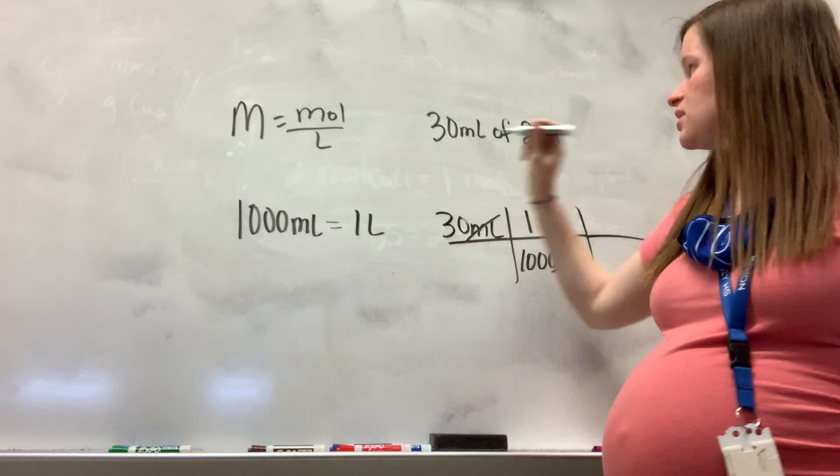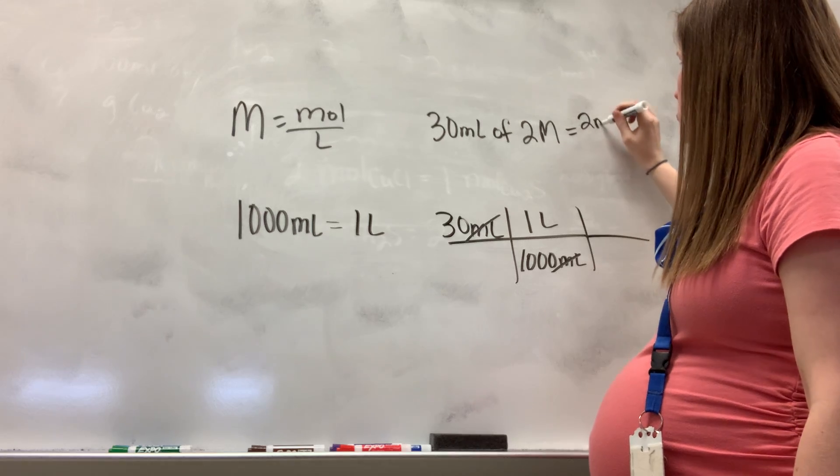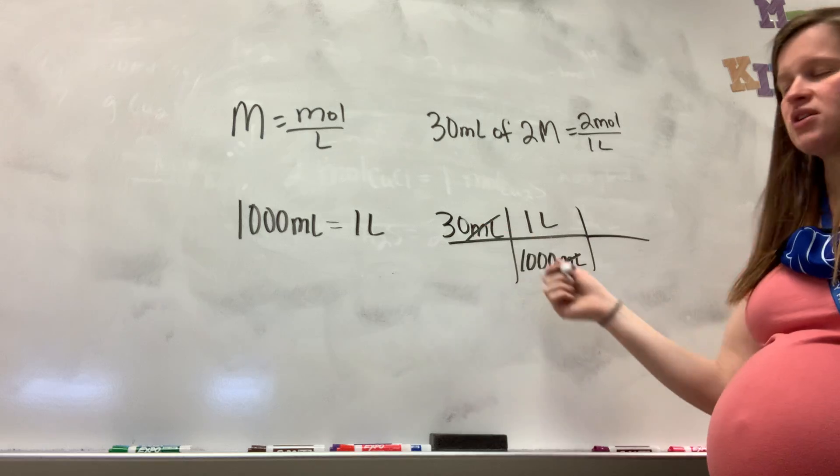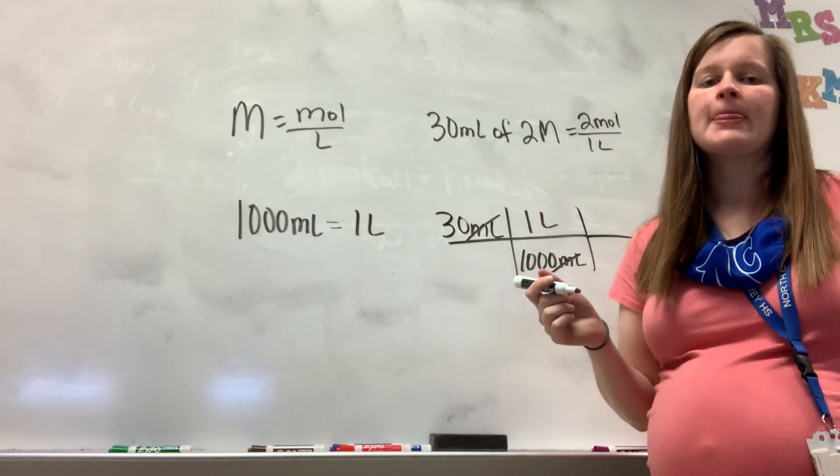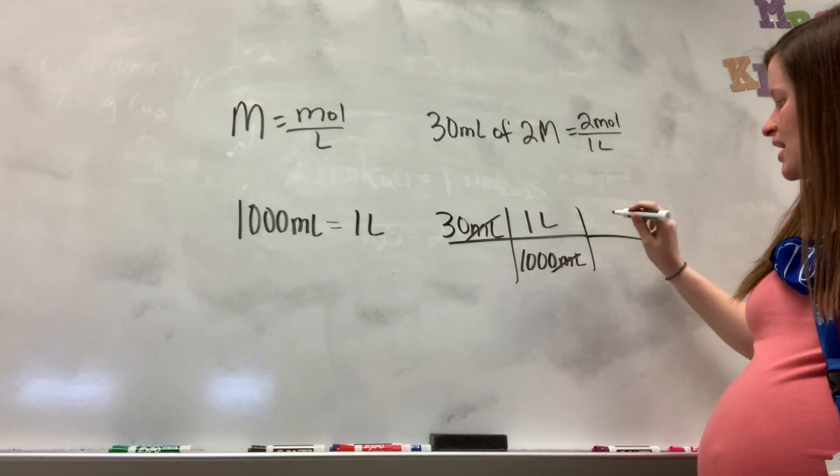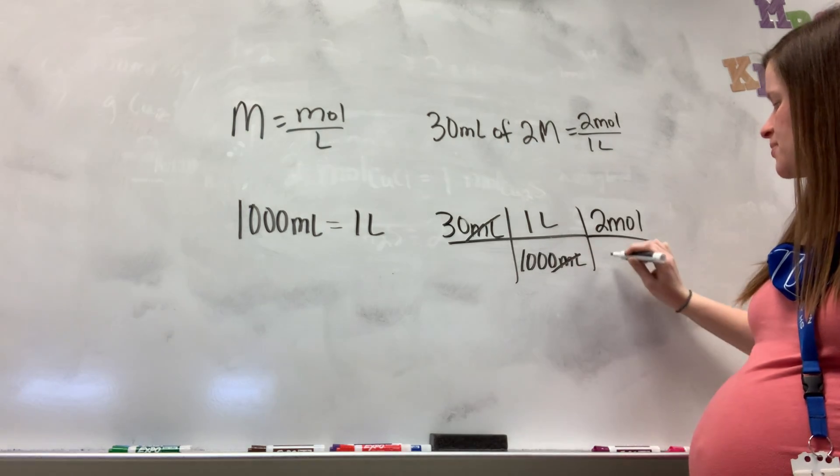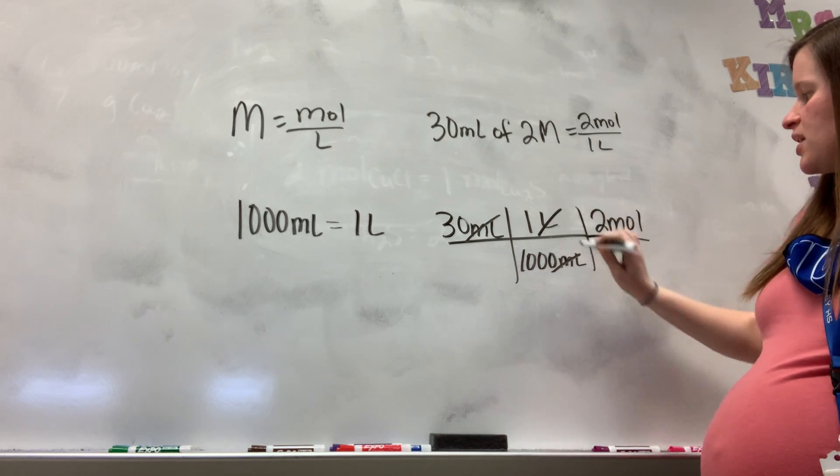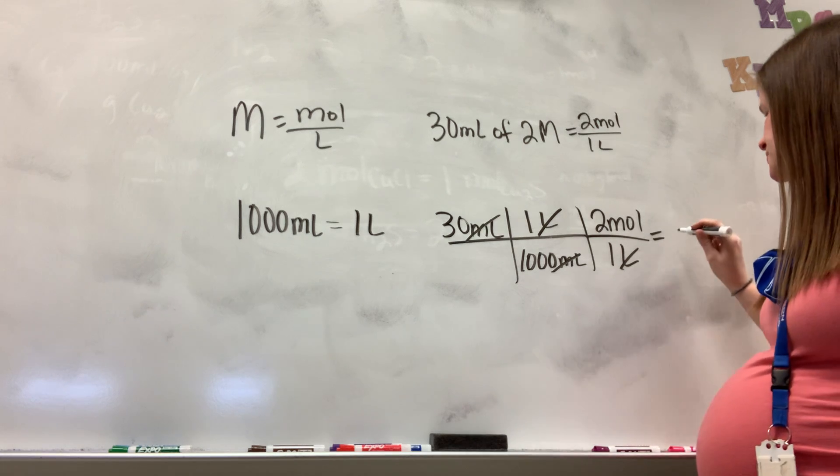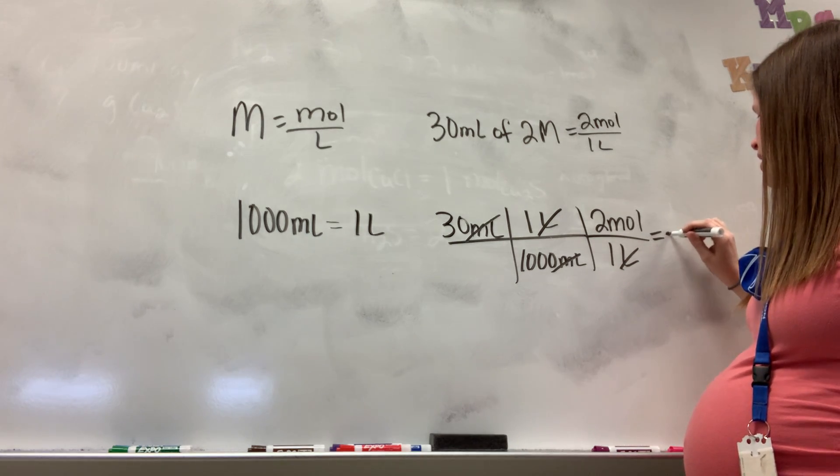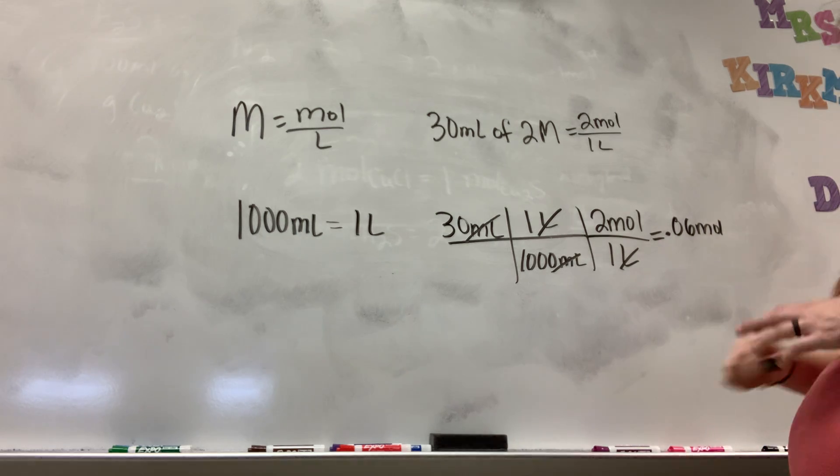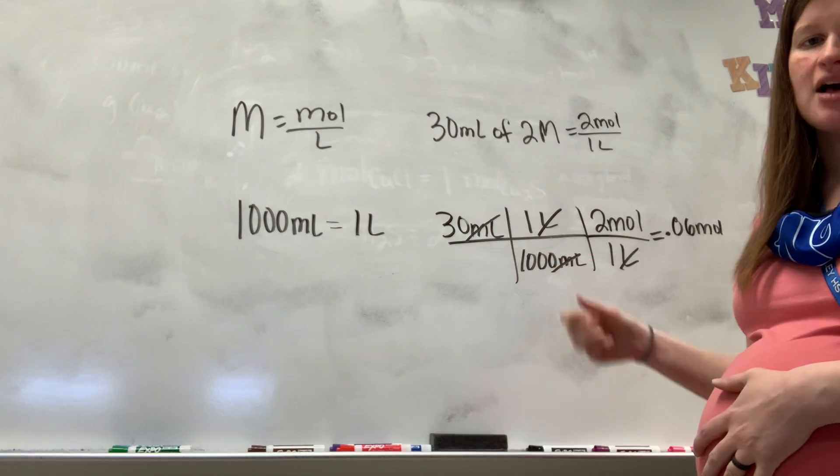Then remember that this two molar, so molar means moles per liter, that actually means I have two moles in one liter. I don't have anywhere close to a liter here because 30 is nowhere close to a thousand, but I do know that I can get units to cancel. I'm going to set it up, and this should still solve for the problem the same way. Liters will cancel liters, and then I can figure out my moles. In this case, I would have 0.06 moles of whatever that solution is, because I multiplied across and divided by that thousand down below.